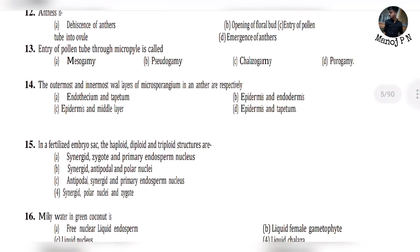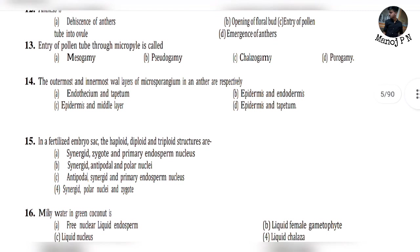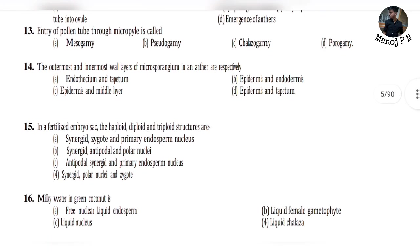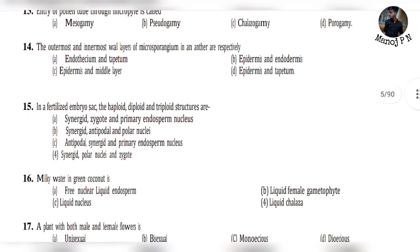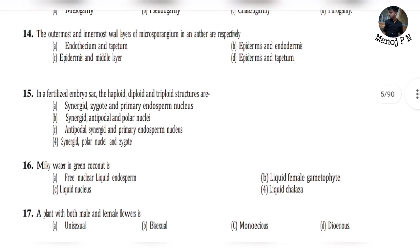Question 12: The end of the pollen tube enters through the micropyle. Question 13: The outermost and innermost wall layers of the microsporangium and anther are respectively — the answer is epidermis and tapetum.